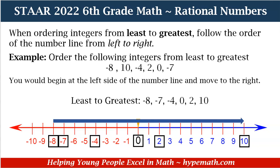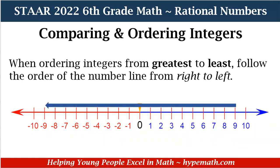Now let's look at what we would need to do if we were ordering our integers from greatest to least — that means from the largest number to the smallest number. We would follow the order of the number line from right to left. So we start at the far right side and then follow our numbers all the way to the left.